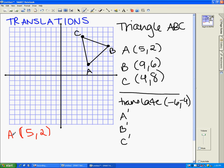So again, the point a is 5, 2, and the translation is negative 6, negative 4. Well, what that essentially means is we're going to add negative 6 to the x, and we're going to add negative 4 to the y. So when we do that, 5 plus negative 6 is negative 1, and 2 plus negative 4 is negative 2.